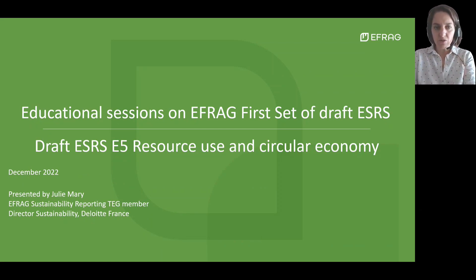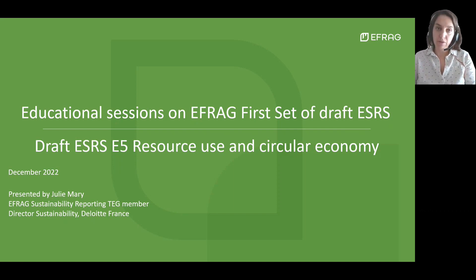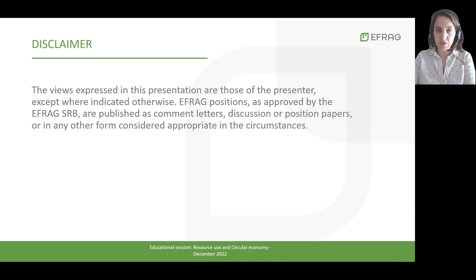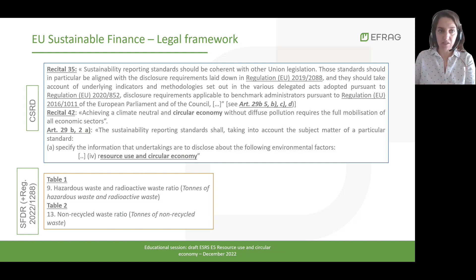Welcome to the educational session on the draft ESRS E5, Resource Use and Circular Economy. I would like to start with a quotation from the EU Circular Economy Action Plan. In the introduction it states: there is only one planet Earth, yet by 2050 the world will be consuming as if there were three. Global consumption of materials such as biomass, fossil fuels, metals and minerals is expected to double in the next 40 years, while annual waste generation is projected to increase by 70% by 2050. This gives the ambition of the EU in terms of circular economy and resource use, and we'll see in the EU legal framework more specifically on sustainable finance in the EU, which is also reflected in the CSRD.